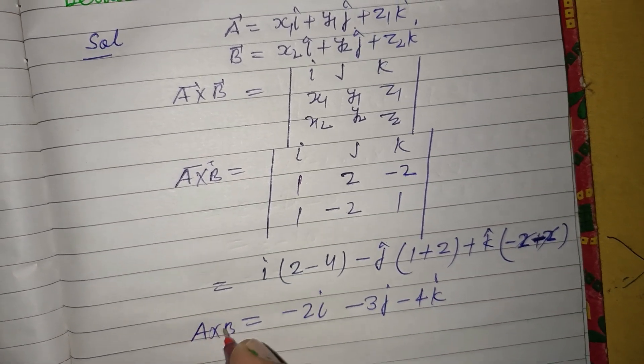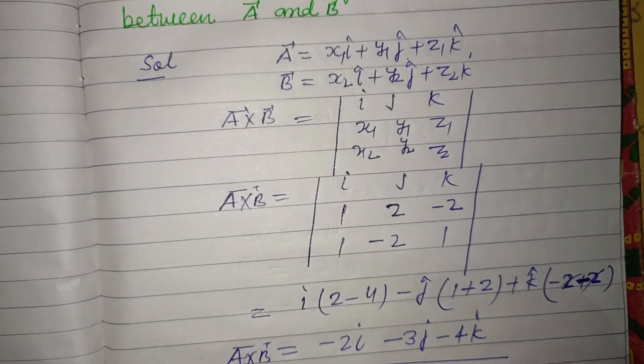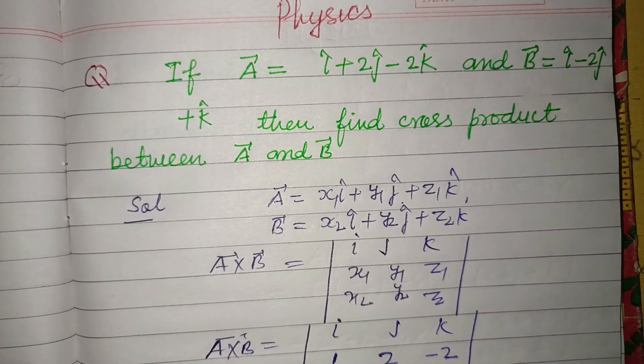So this is the cross product of the two vectors. I hope you got it. Please like the video, subscribe to the channel, thanks for watching.